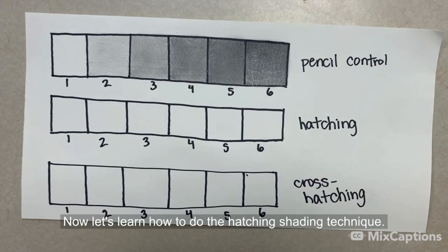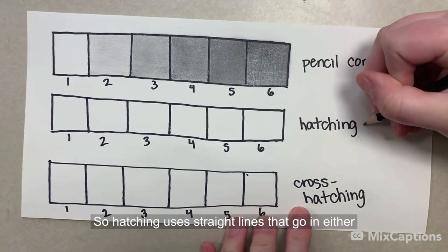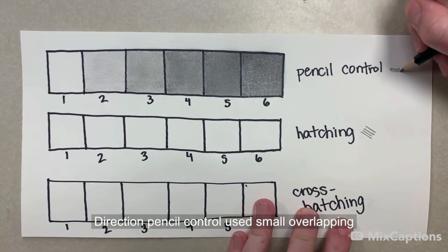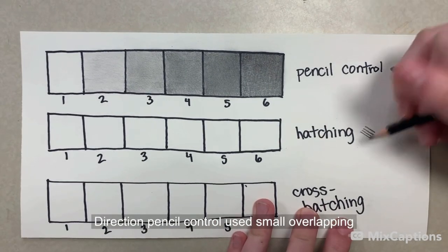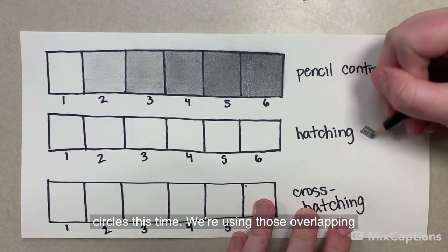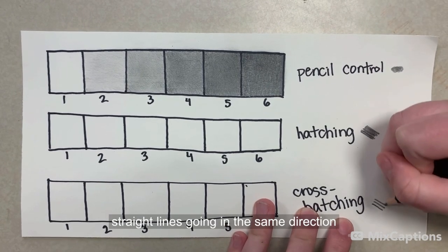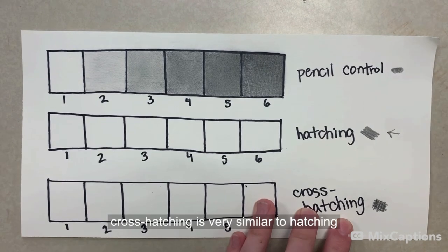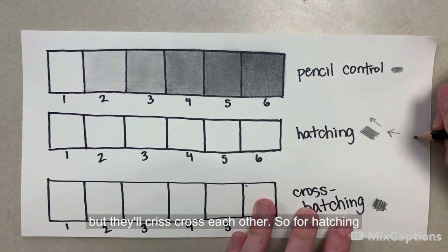Now let's learn how to do the hatching shading technique. So hatching uses straight lines that go in either direction. Pencil control used small overlapping circles. This time we're using those overlapping straight lines going in the same direction. Cross hatching is very similar to hatching, but they'll crisscross each other.